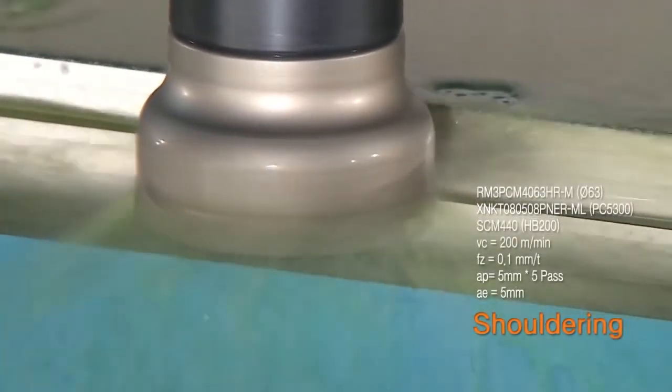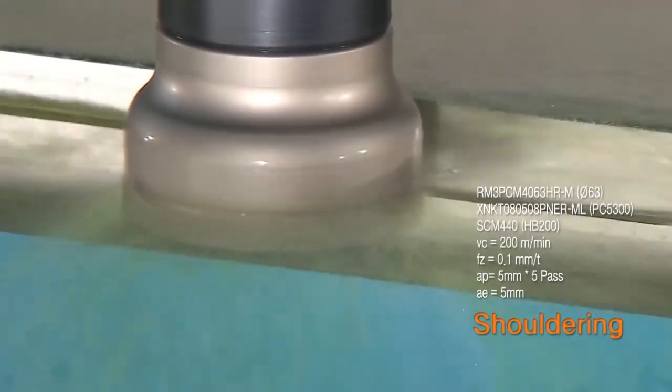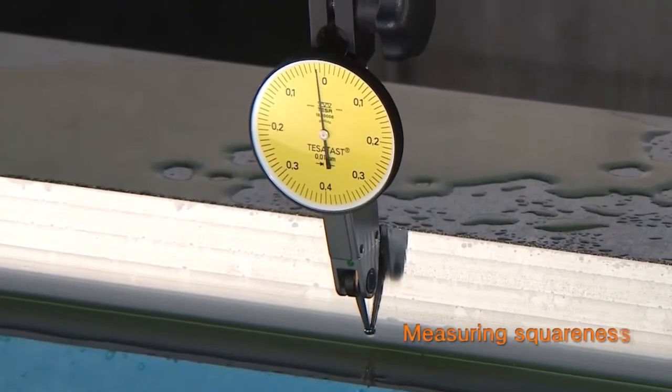RM3 is a multipurpose tool which can be used for shouldering, facing, ramping and helical machining.